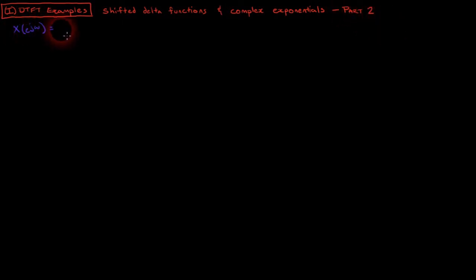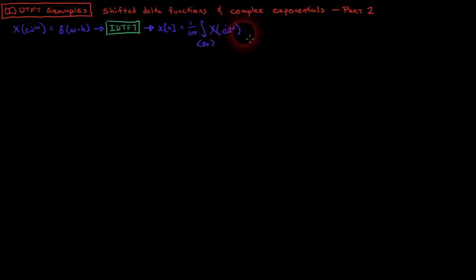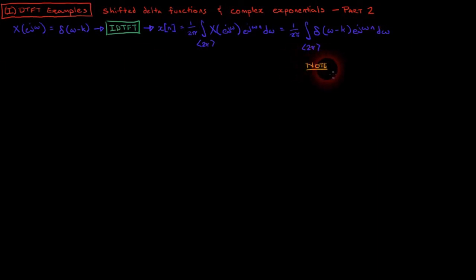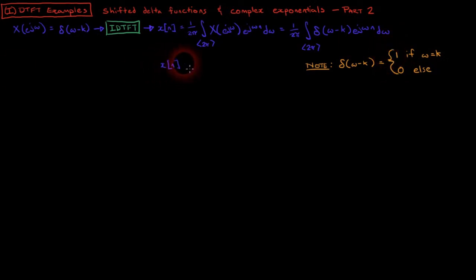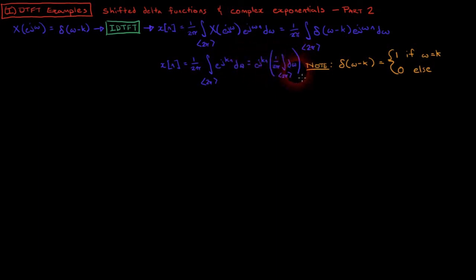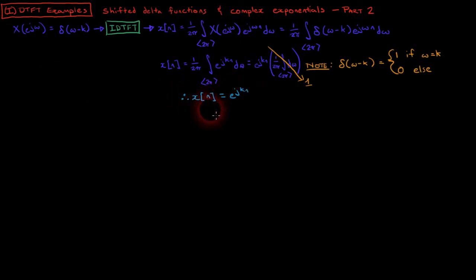Let delta of omega minus k be the input to the inverse DTFT. Plug the input function into the inverse DTFT equation and simplify. Note that delta of omega minus k is 0 except when omega equals k, when it is 1. Therefore, we can substitute k for omega and pull the complex exponential out of the integral. Note that the integral and the 1 over 2 pi factor simplify to 1. We are left with the result that x of n equals e to the j k n, and so we have shown that the DTFT pair of e to the j k n is delta(omega minus k).